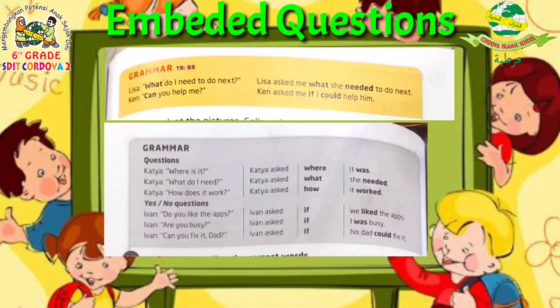When Lisa asked, there was the word 'do' there. But in the embedded question, 'do' is removed. All yes/no questions — can, do, auxiliary verbs — are removed. Then the verb or question word — 'need' — is changed to its past form (second form), and it is placed after the subject: 'what she needed to do next.'